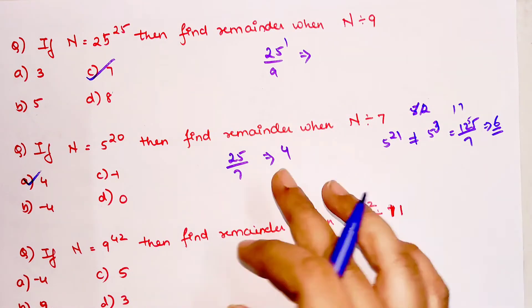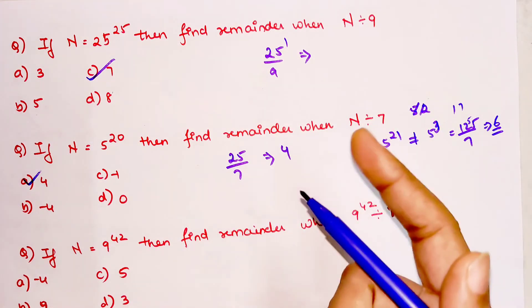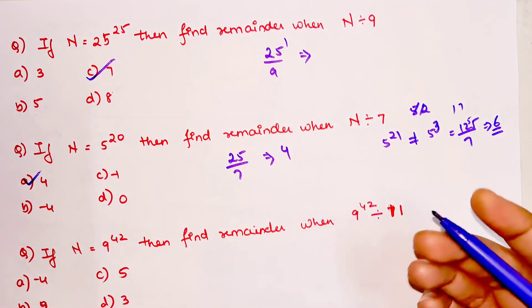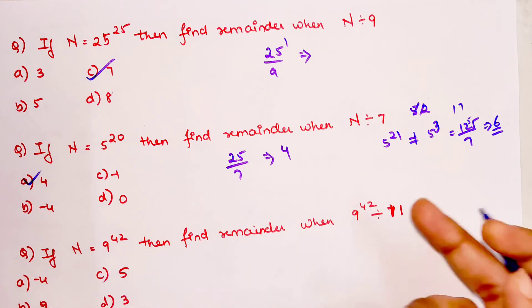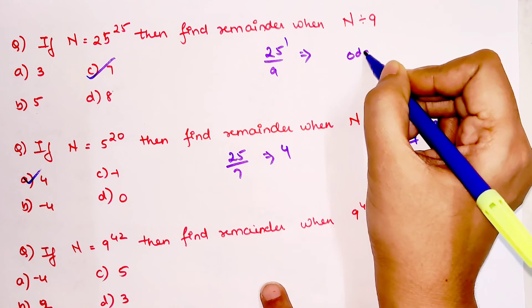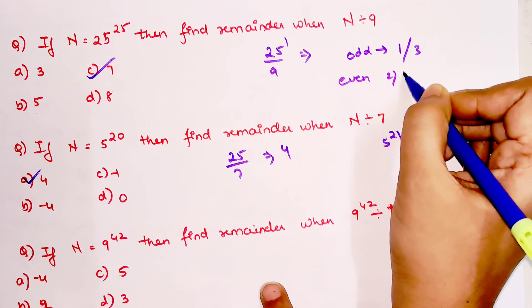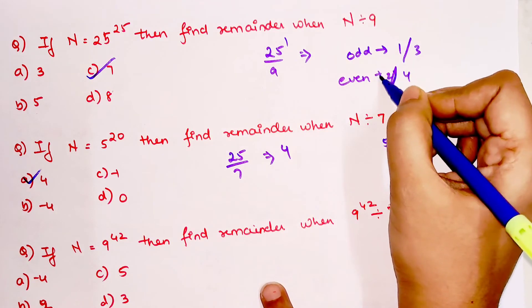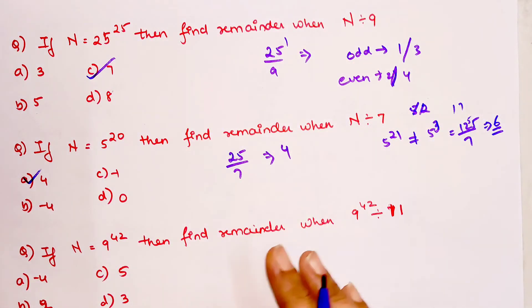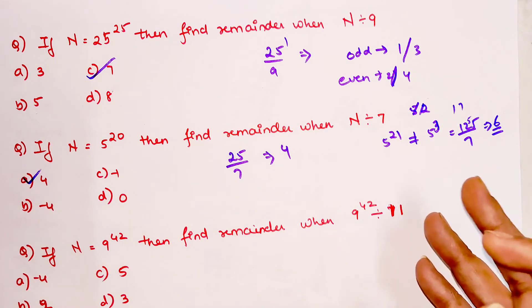So in this particular scenario where even after putting the index as 1 you are not able to get it, then in that case you switch the index and make it 3. That's why it was like odd: if it is odd you make it 1 or 3. In case of even, you make it 2 or 4. Why like that? Because even after putting 2, it is still smaller than your denominator. Then in that case you should put the index as 4.